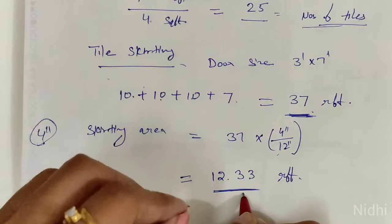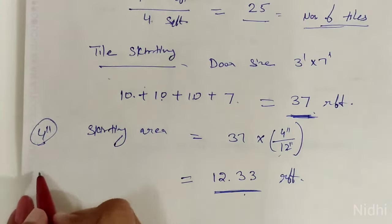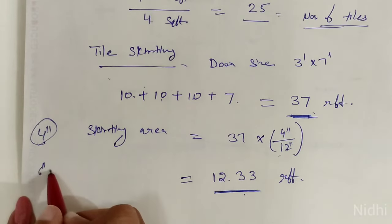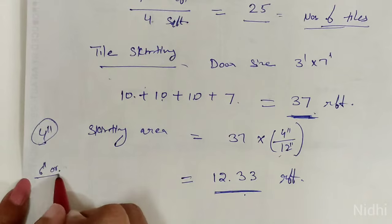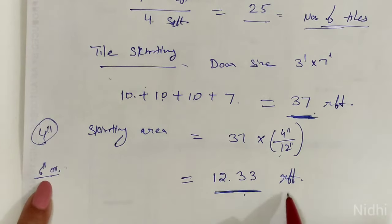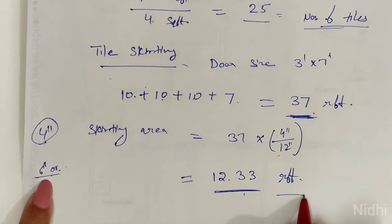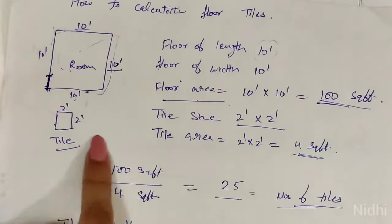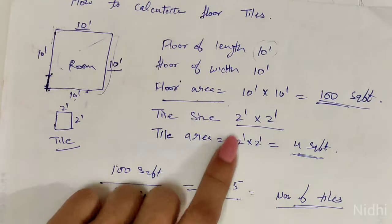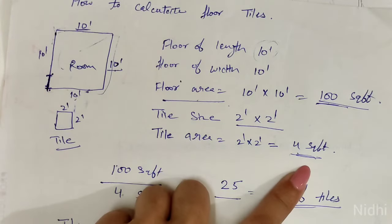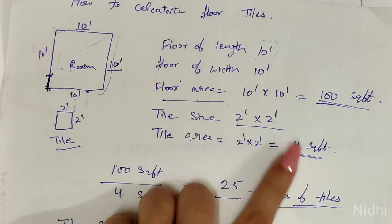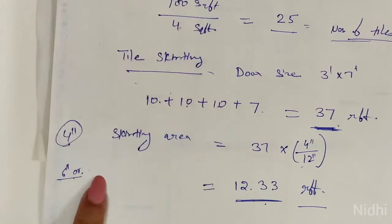Always we are using running feet where we have 6 inches or less. In this case we will use running feet. Here we have 2 feet by 2 feet area and 10 feet by 10 feet area, so we used square feet. Where you have 6 inches or less, we will use running feet.